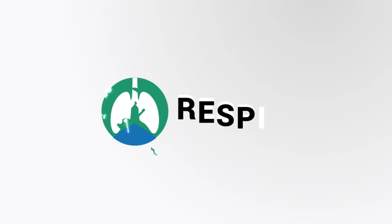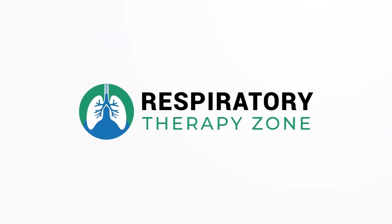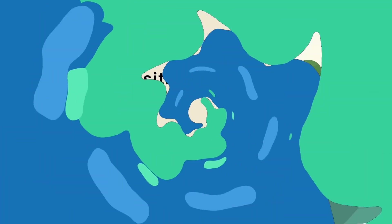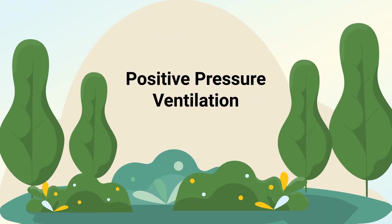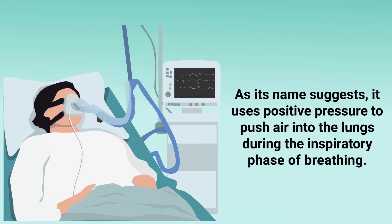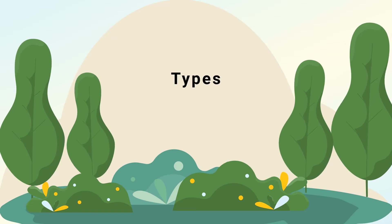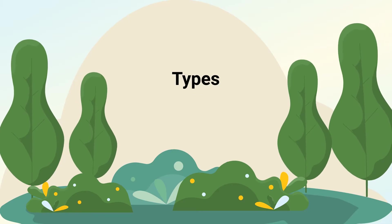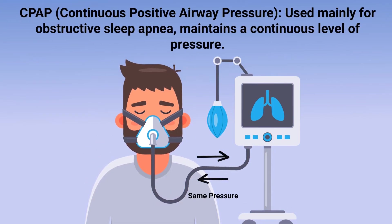First, let's talk about positive pressure ventilation, which is the most commonly used form in modern medical practice. As its name suggests, it uses positive pressure to push air into the lungs during the inspiratory phase of breathing. Some of the most common types include CPAP, which is used mainly for obstructive sleep apnea and maintains a continuous level of pressure.